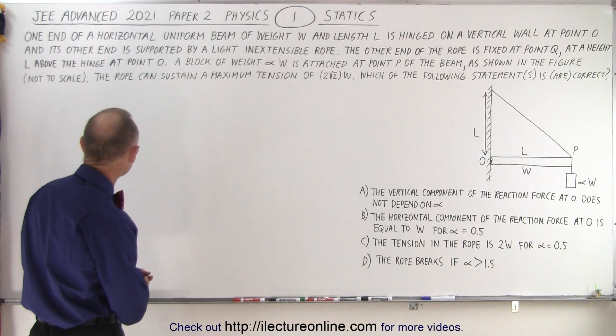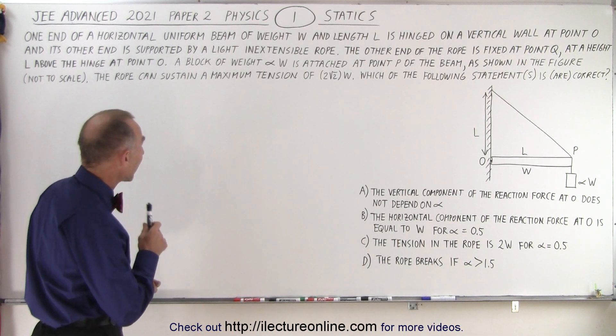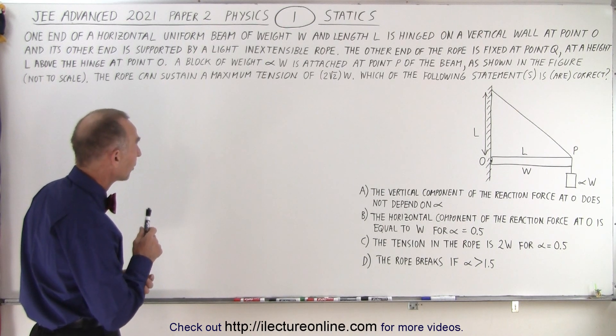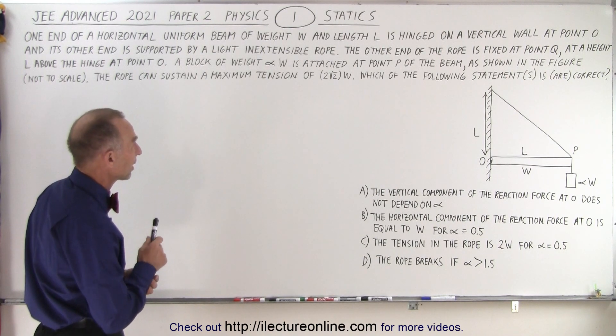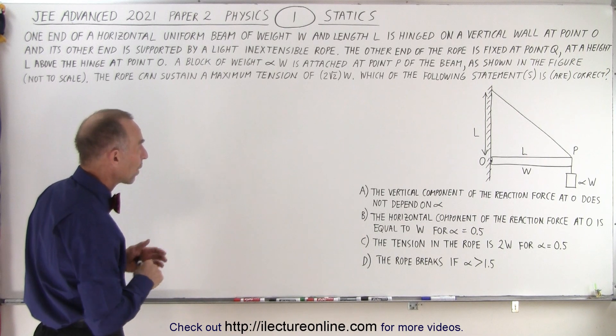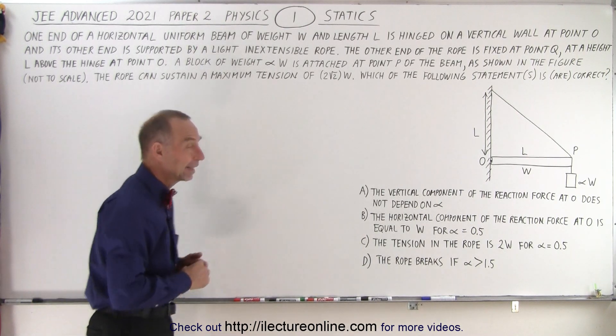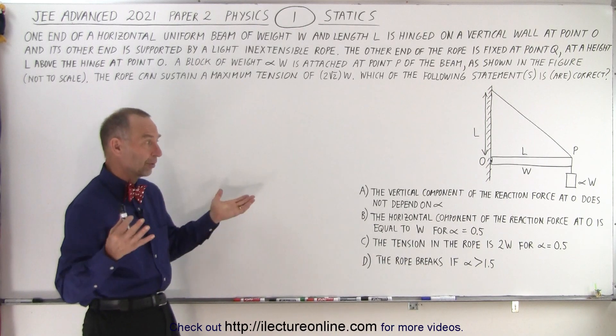The figure is not to scale. The rope can sustain a maximum tension of 2 times the square root of 2 times W. Which of the following statements is or are correct? They give us four statements, and any one of the four could be correct. So which ones?